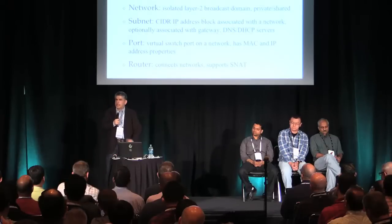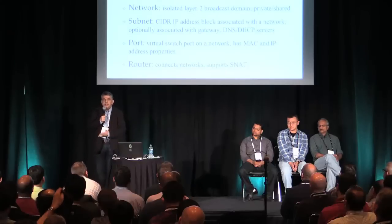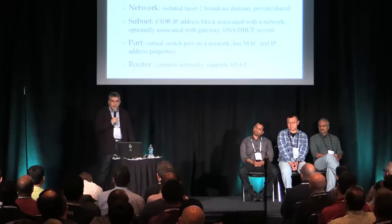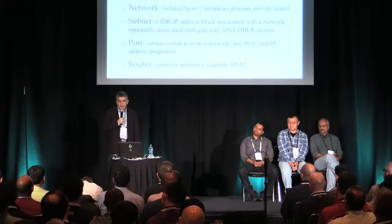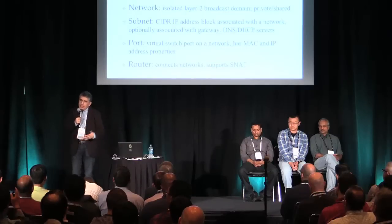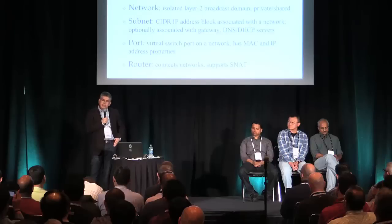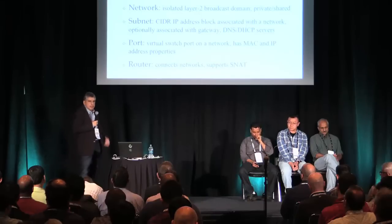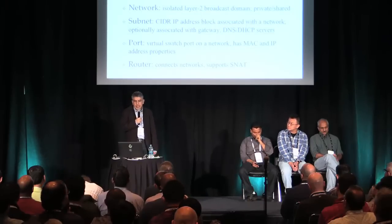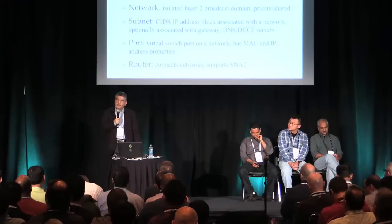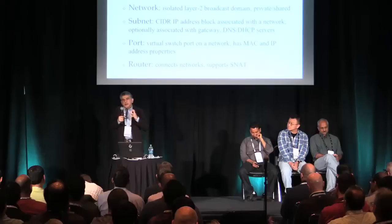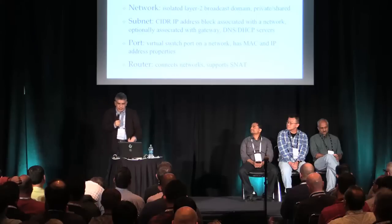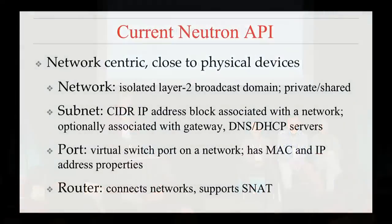Networks are isolated layer-two broadcast domains. You have the option of private or shared networks. Subnets are a collection of IP addresses associated with a network, with optional DNS or DHCP servers. Ports are where VMs get connected to networks. Routers allow you to hook different subnets together — it's a model close to real-world networking, abstracting the actual network devices.